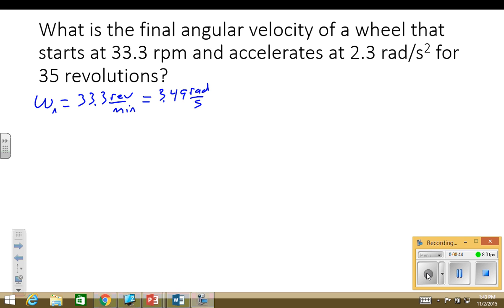And we have omega f is what we're looking for. We're also given acceleration, that's alpha is 2.3 radians per second squared. And we have a delta theta of 35 revolutions.